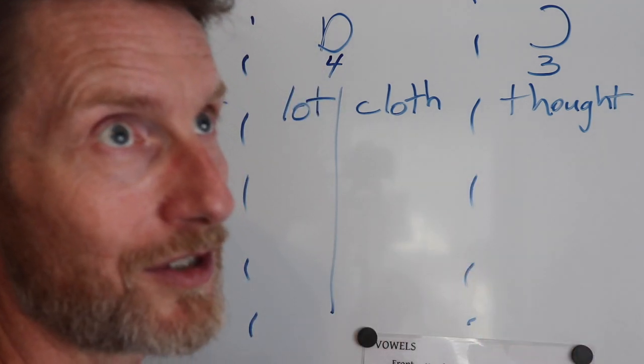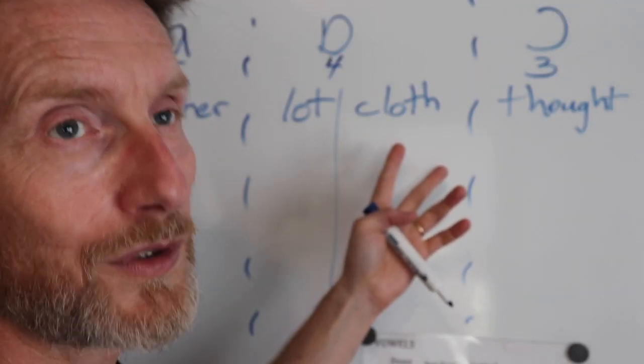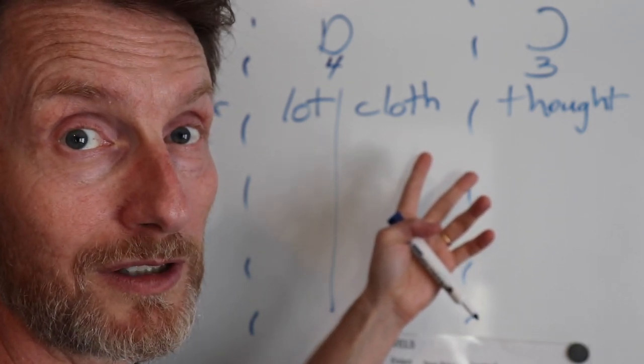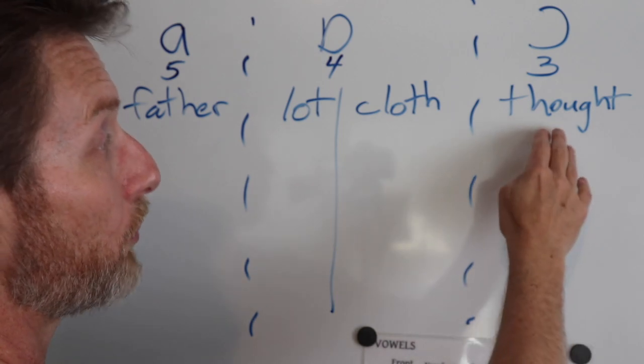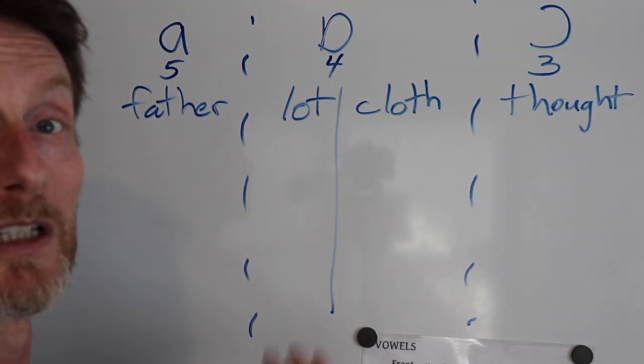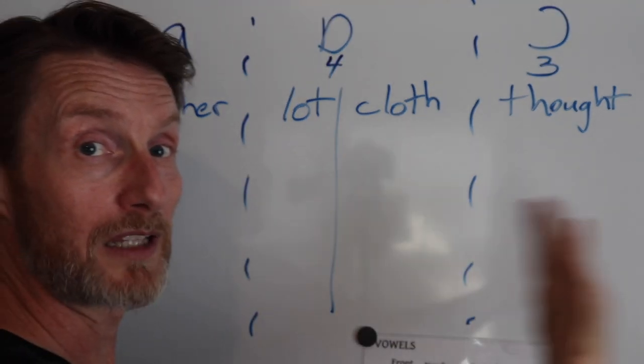Other than when there's an R after the 4, so that often New Yorkers will make a division there, like horrible. But they will tend to say thought, cloth, and lot, and father. Lumping these together, lumping those together.